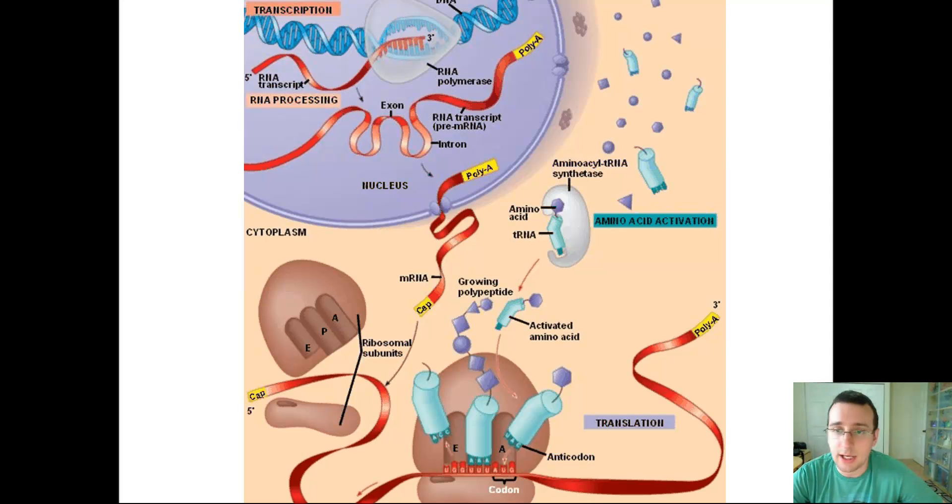Then this RNA, if it's in eukaryotes, is going to be processed. It's going to be adding a poly-A tail, a G-cap, and removal of the introns to make an exon-only mature RNA.